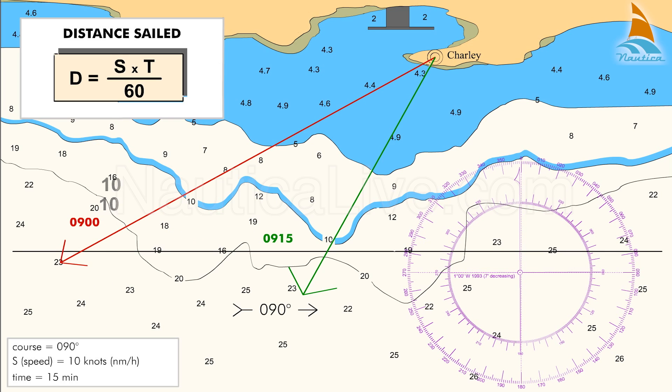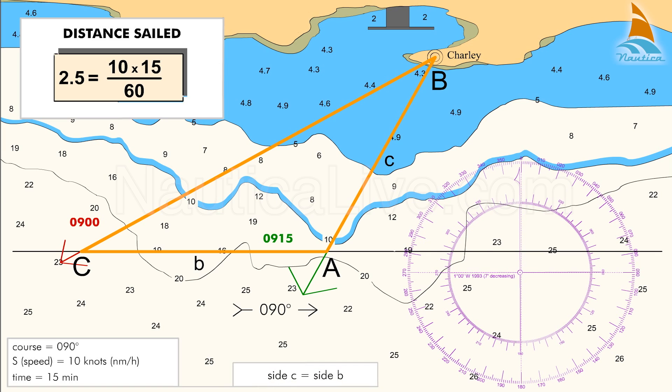In our case, that's 2.5 nautical miles. As we can see, the two bearings in the course form an isosceles triangle, ABC, where sides C and B are equal.